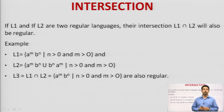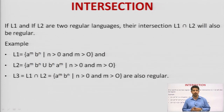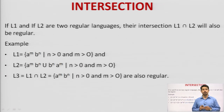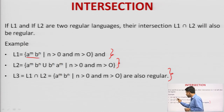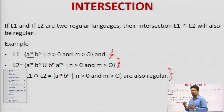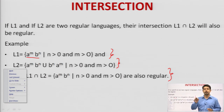Next comes intersection. The concept is somewhat similar to complement and union. If we take a language which is regular and another language which is also regular, and find the similarities between them — if there are commonalities, the intersection will exist, and the resulting language will also be regular. So regular language is closed under intersection. For example, L3 = L1 intersection L2, where L1 has A^N B^N and L2 has some other pattern — if commonalities exist, the intersection is a regular language.